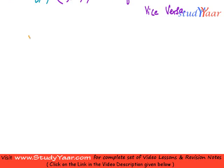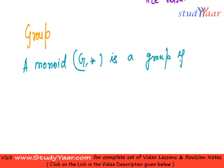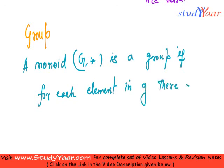Now we are going to see what is a group. So a group is defined as follows. We say a monoid (G, star) is a group if for each element in G there exists an inverse. If that is the case, then we call that particular monoid as a group.